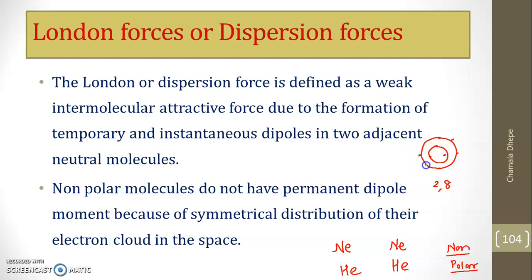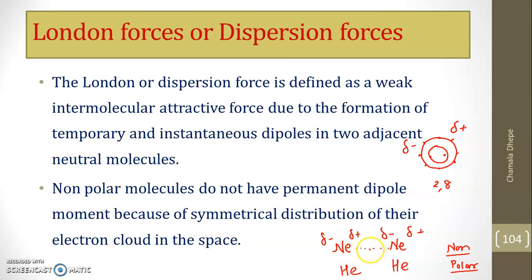But when neon molecules approach each other and come in contact, the symmetrical distribution of electrons gets disturbed — electrons move towards one side, acquiring fractional negative charge, and the other side acquires fractional positive. Similarly in the adjacent molecule, fractional negative and positive charges form. A negative-positive bond forms between these two, creating a temporary force of attraction. This temporary bond is formed between two neutral non-polar molecules. London force always exists between non-polar molecules that don't have a permanent dipole moment.